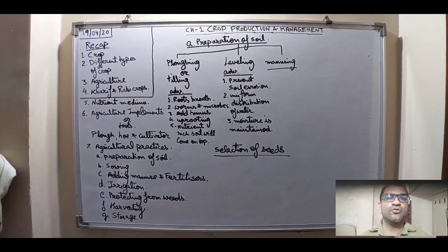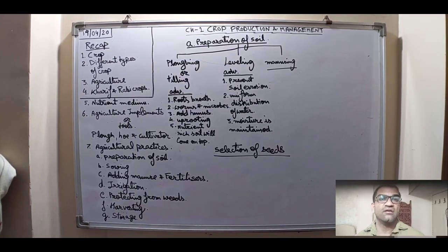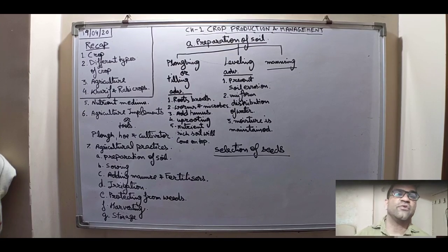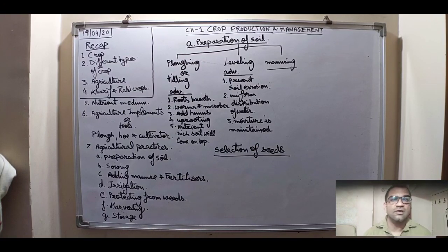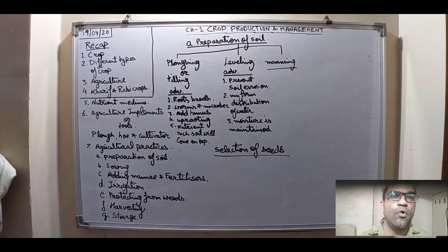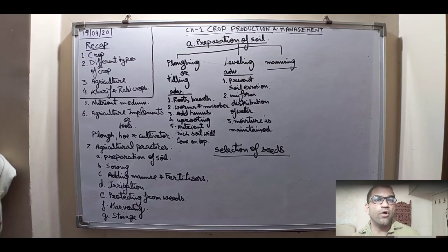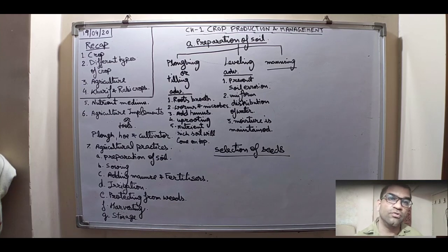The first step in agriculture practices is the preparation of soil. It includes three steps: plowing, leveling, and manuring. Plowing means turning or digging the soil — it is also called tilling the soil, or 'mitti ko khodna' in Hindi. Without plowing, we cannot sow the seeds.